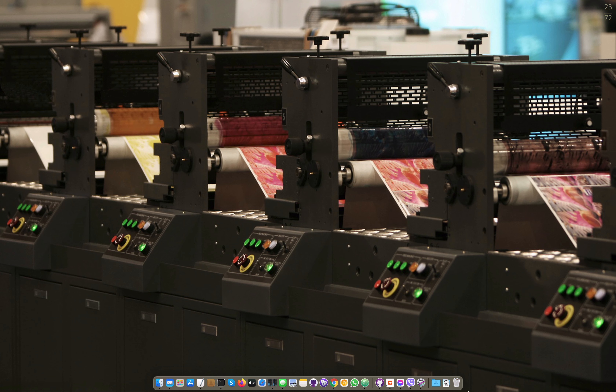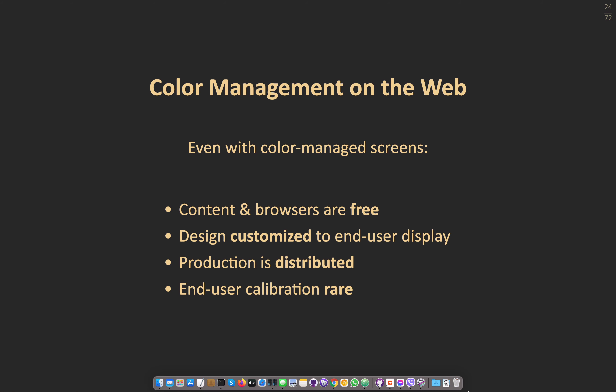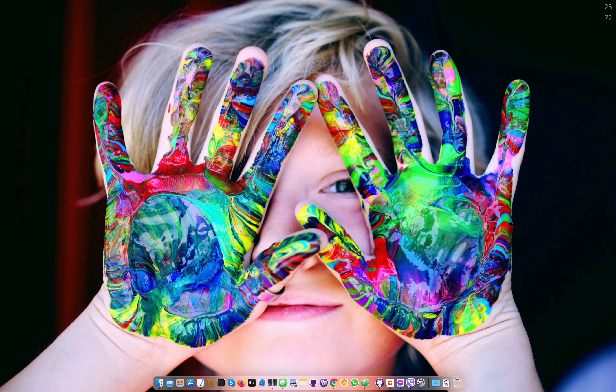Contrast this with color management on the web, even assuming you have a color managed screen. The content and browsers are free, so the only money in the system goes to the advertiser. Design is customized to the end user's display — resolution, colors available, various factors. Production is distributed, happening on each user's laptop, tablet, or phone. End user calibration is rare. The device may arrive with some factory calibration, but the user won't have even a colorimeter, let alone a spectrophotometer. The result: very colorful, but rather messy.